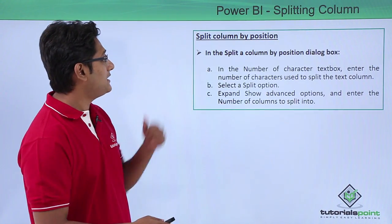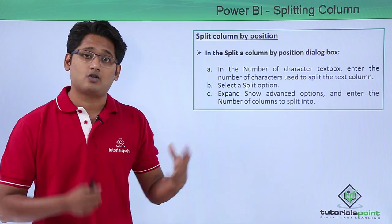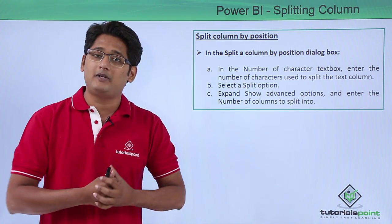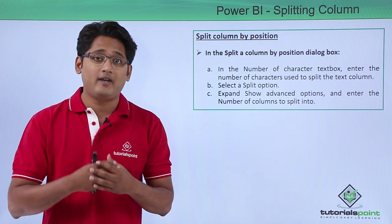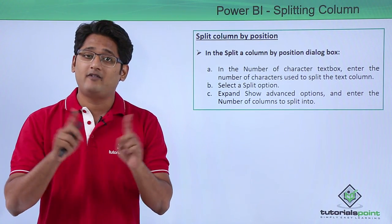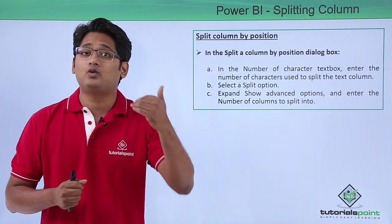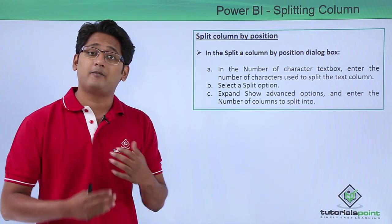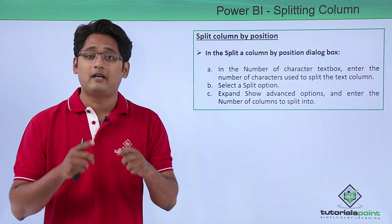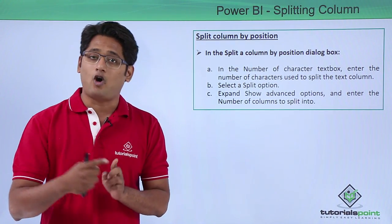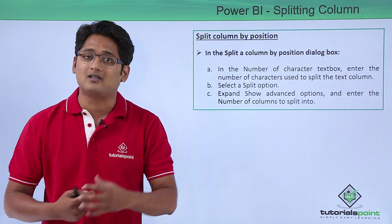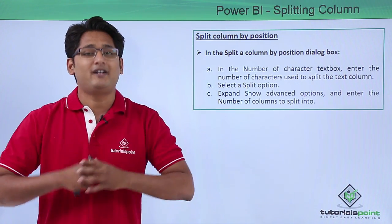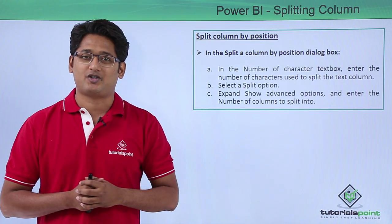The second method is splitting the column by position. We have to decide whether we want the split at the third or fourth character, so we can be very specific about the number of characters. This is used when you are sure you want to split the first three or four characters in a certain column. We will have a better understanding in the practical approach.